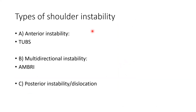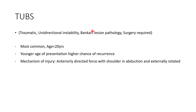Types of shoulder instability are divided into anterior instability, multidirectional instability, and posterior instability. Anterior instability is mainly TUBS, multidirectional is AMBRI, and posterior instability involves posterior dislocation. Starting with TUBS — most common age group is less than 20 years. The younger the patient, the higher the recurrence rate. The mechanism is an anterior directed force with the shoulder in abduction and external rotation.